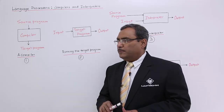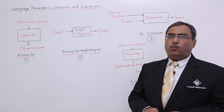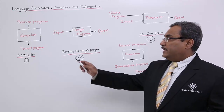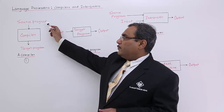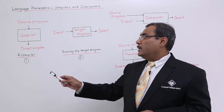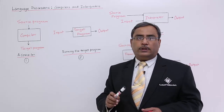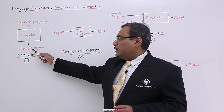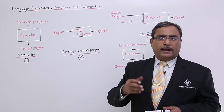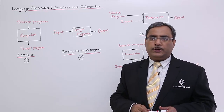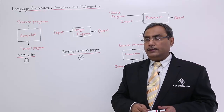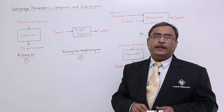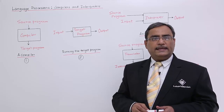If you consider figure number 1, here we are showing one kind of language processor known as the compiler, which takes a program in the source language — also known as the source program. This compiler will deal with that particular program and translate it to the target program written in the target language. In case of a compiler, when the compilation or translation process takes place, the program is not executing.